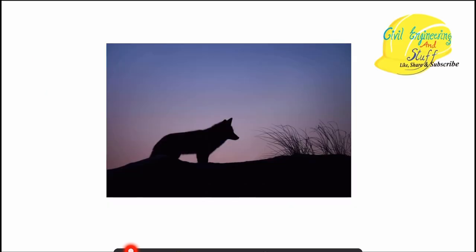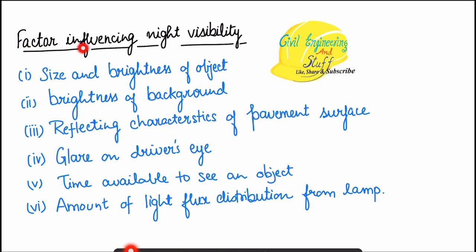The second factor is the brightness of the background. As seen in the image, if the background is much brighter than the object, we need a good amount of light incident on the object so it becomes brighter than the background — only then will we see the object clearly. The background should be on the darker side compared to the object; if not, we must direct more light at the object for better visibility. The third parameter is the reflective characteristics of the pavement surface — for example, black-top pavement absorbs most incident light, and this must be taken into consideration when assessing night visibility.